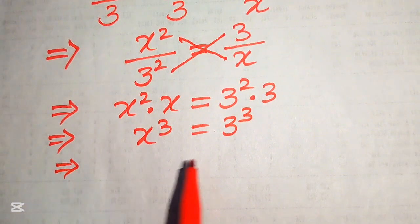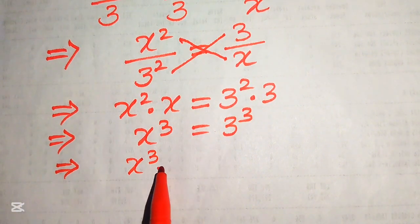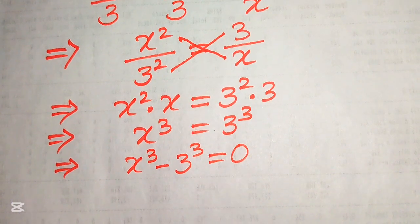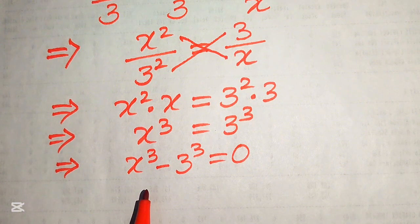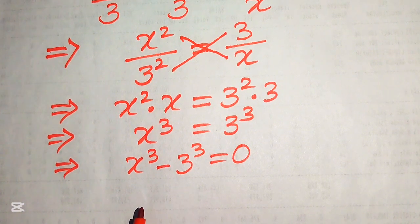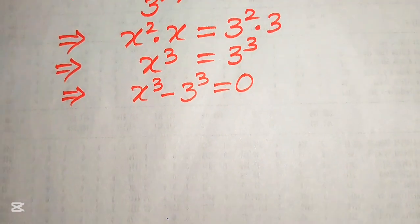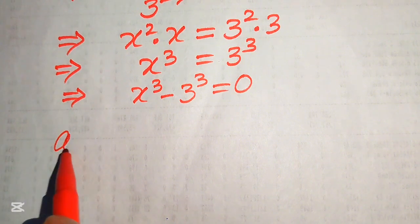We move the term from the right-hand side to the left-hand side and it becomes x cubed minus 3 cubed equals 0. This equation is cubic in x, so we can apply the difference of cubes formula to solve it.